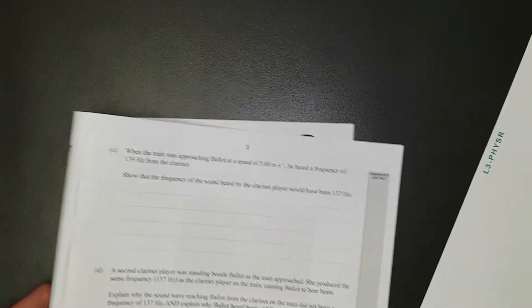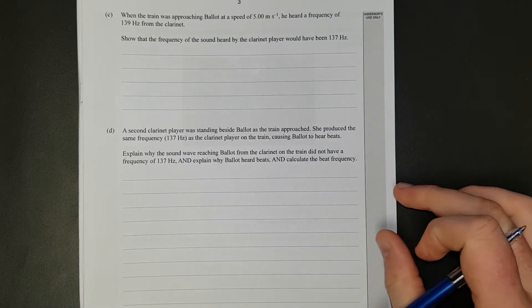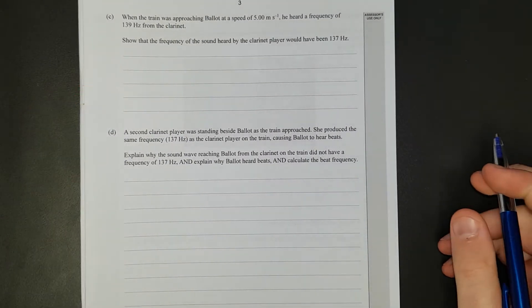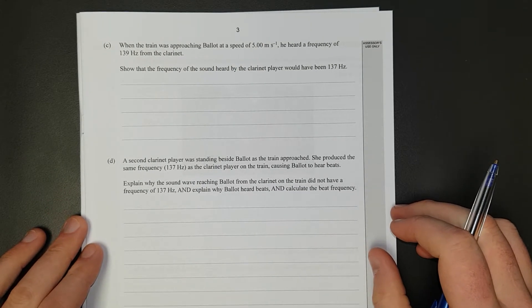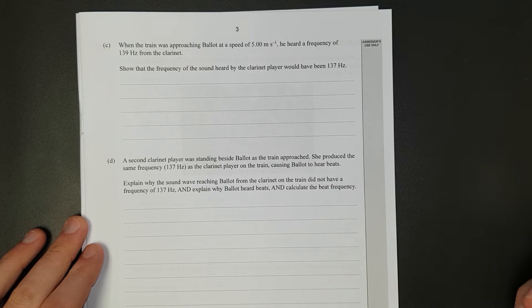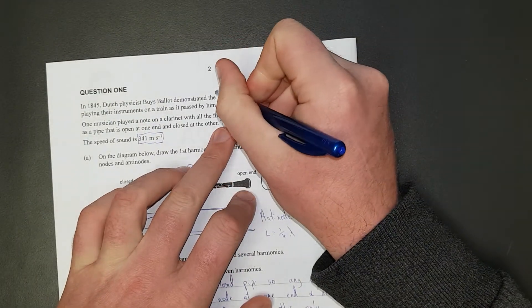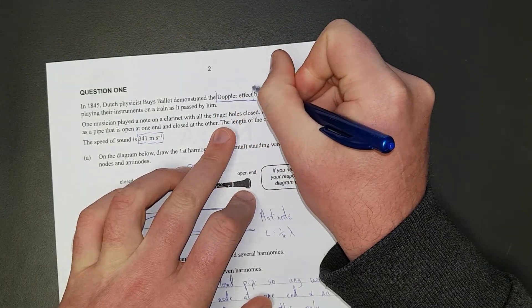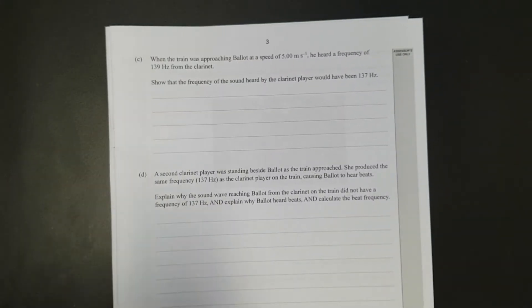I'll flip this over so we can see. I'm going to move the formula sheet out. Right. When the train was approaching Ballot at the speed of 5 meters per second, he heard a frequency of 139 hertz from the clarinet. So the frequency of the sound heard by the clarinet would have been 137 hertz. So just over here, it's the Doppler effect. That's the type of question it is, plus standing waves and pipes. So this question is going to have to use the Doppler formula. And we'll go find that over here.